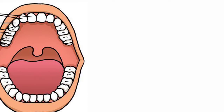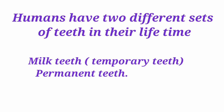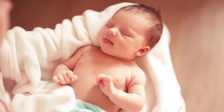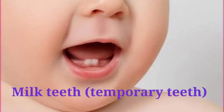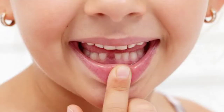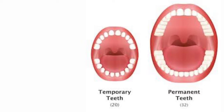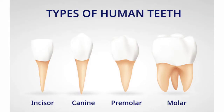We chew the food with the help of our teeth, so let's learn about teeth. Humans have two different sets of teeth in their lifetime. A newborn baby usually has no teeth; teeth start appearing when the baby is just a few months old. These teeth are called milk teeth or temporary teeth. From the age of five, the milk teeth gradually start falling off one by one and the permanent set of teeth replaces them. The permanent set of teeth consists of 32 teeth. Adult humans have four types of teeth in their mouth.